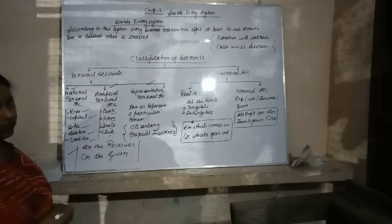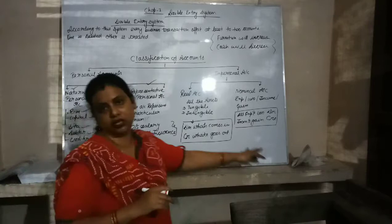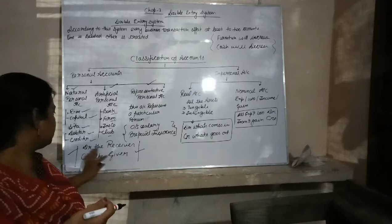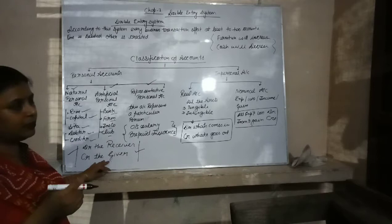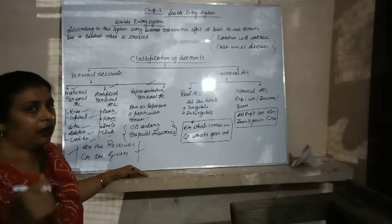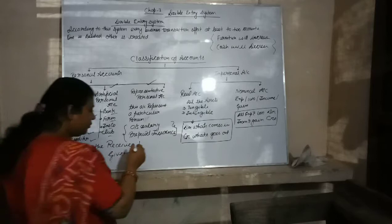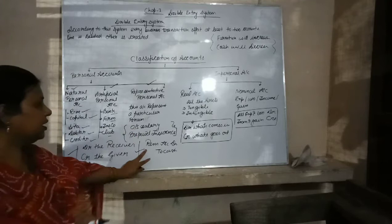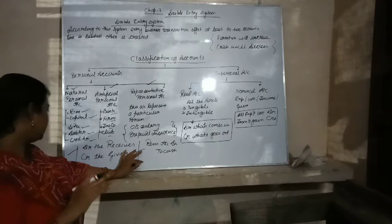The rule of personal account is: debit the receiver and credit the giver. This is the golden rule of personal account. The person who receives things should be debited, and the person who gives things is credited. For example, if Ram has received cash of 10,000, then Ram is the receiver. So we will write: Ram account is debited to cash, because Ram is the receiver and the person who gives is credited.